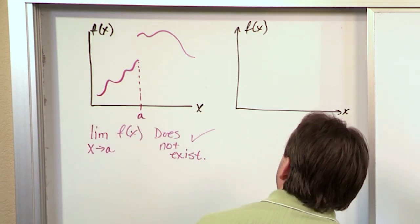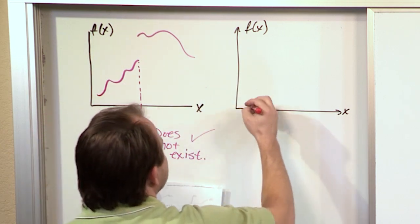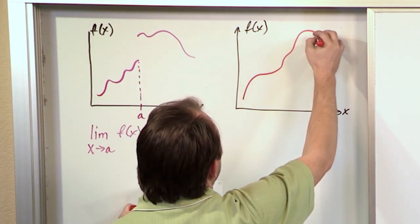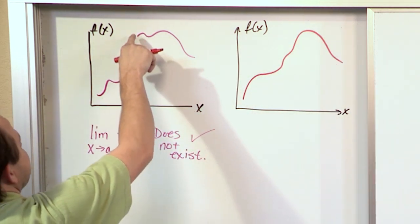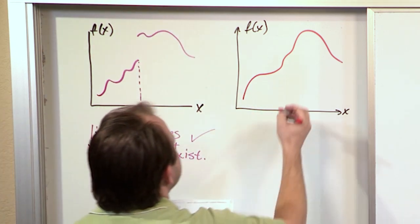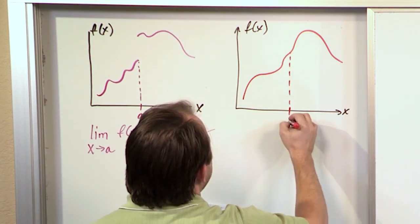So we can have a situation where the function does not have any kind of discontinuous jump. It might just continue like this. You see, I've kind of connected the dots here, and the function just kind of continues. And at the same value, A, right.